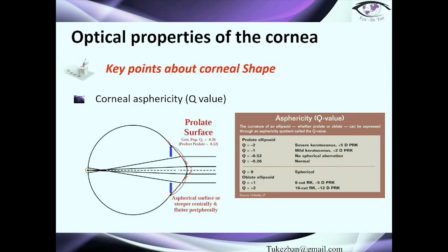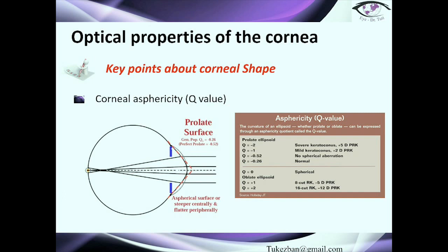Another important parameter related to corneal shape is the Q value, which is a corneal asphericity parameter provided by corneal examination devices. The surface of the cornea is prolate, and the optimal Q parameter value is minus 0.52. By estimating this number we can assess the condition and shape of the cornea. For example, a Q value of minus 2 should prompt consideration of severe keratoconus or a patient with a history of 5-diopter PRK surgery, whereas a Q value of minus 1 may indicate mild keratoconus.